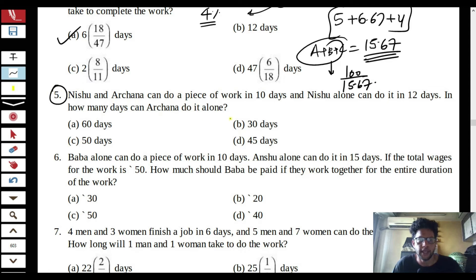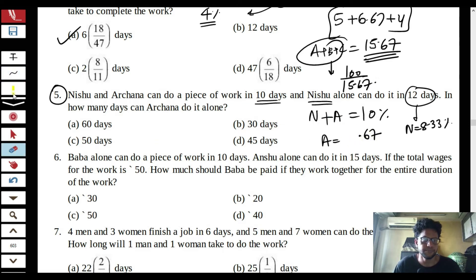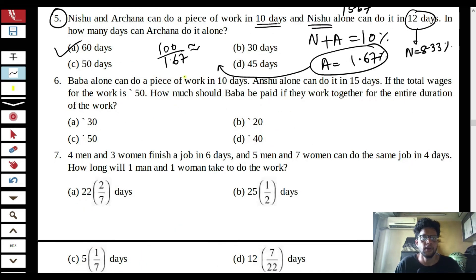Question 5: Nishu and Archana together can do a piece of work in 10 days, meaning they complete 10% per day together. If Nishu alone takes 12 days, she does 100/12 = 8.33% per day. Subtracting: Archana does 10% − 8.33% = 1.67% per day. Therefore Archana alone will complete the whole work in 100 divided by 1.67, which is roughly 60 days.